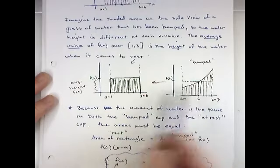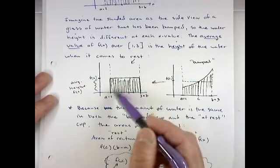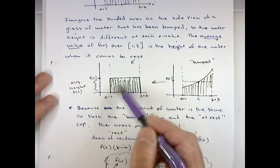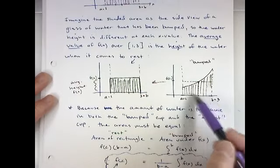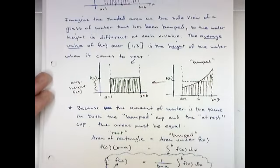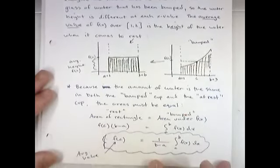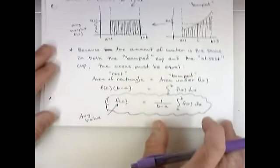Now it makes sense that in terms of area, the area of the side of the glass when the water is at rest is the same as the area under the parabola when the water was bumped. And that will end up giving us our formula. Those areas are the same.